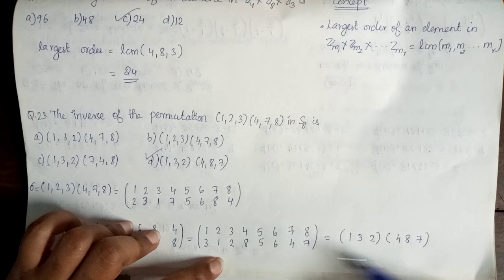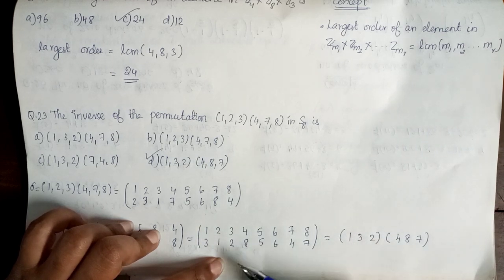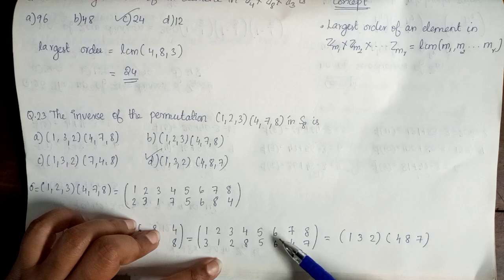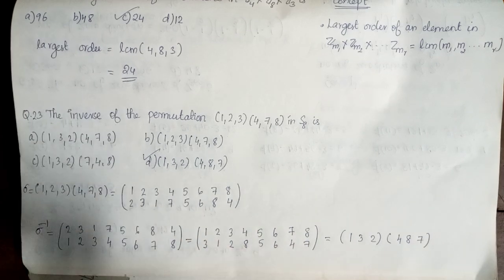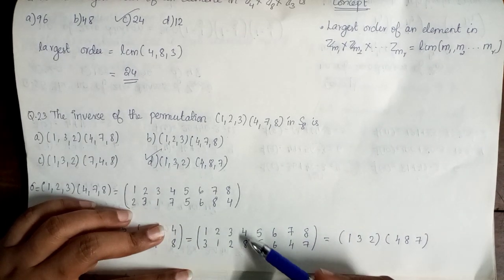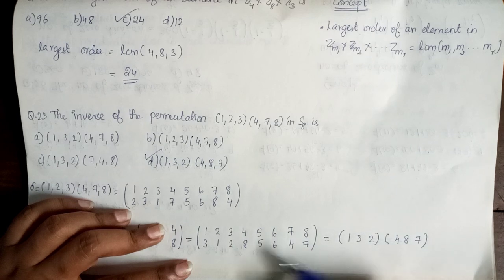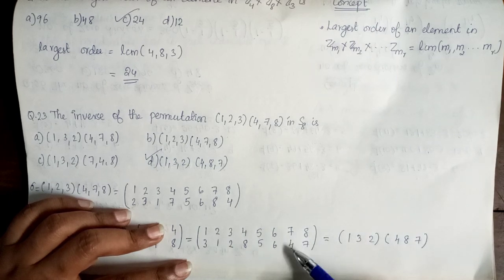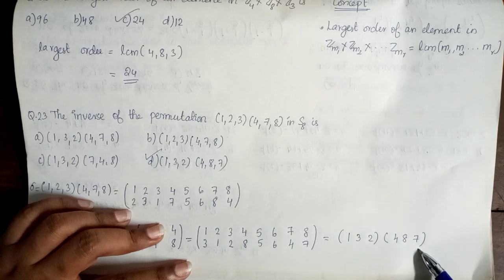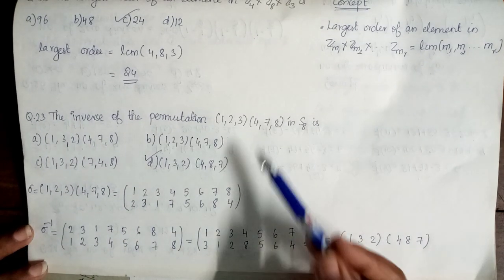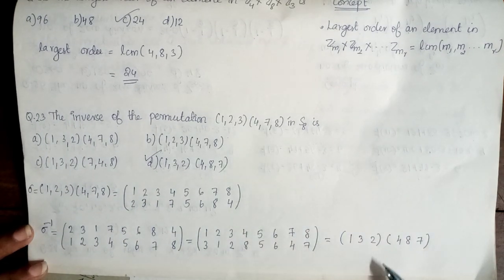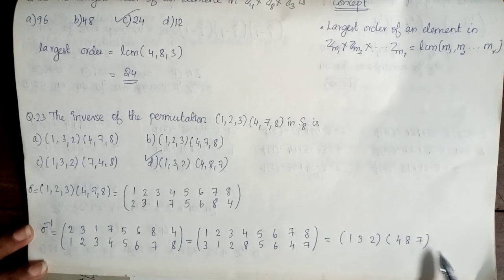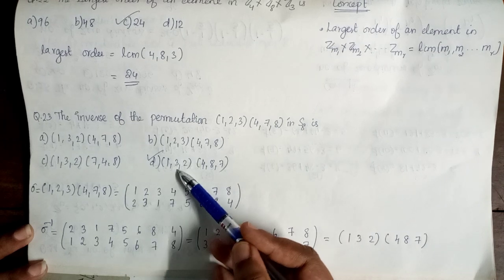Checking the cycle: 7 is mapped to 4, so this cycle is closed. So the inverse permutation is (1 3 2)(4 8 7). So option D is correct.